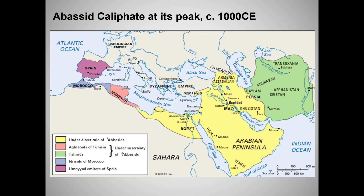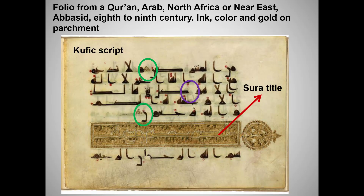We're going to return to El Andalus, or Muslim Spain, in a moment. But first, let's pause and talk about Islam as a religion of the book. We will look at an Abbasid work from North Africa or the Near East. This required work was produced on parchment — that is, on untanned animal skin. The Quran was one of Islam's greatest unifying forces, virtually always printed in Arabic. It created a common language and literature across the Islamic world.